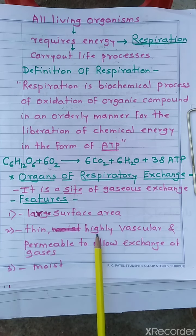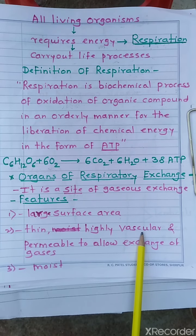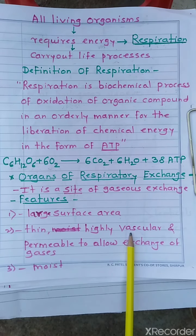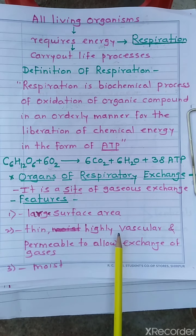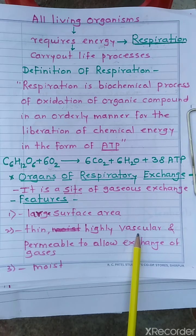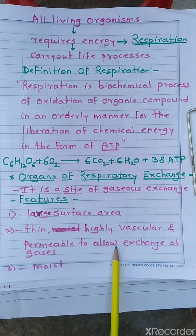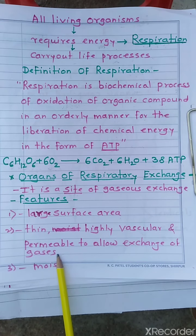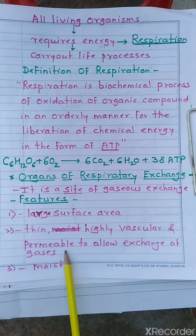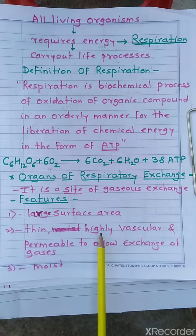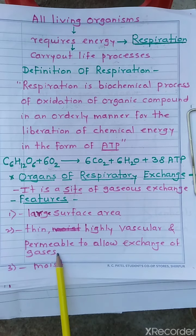Highly vascular means the organ has a good supply of blood vessels. When there are more blood vessels, a richer blood supply enables much better gas exchange. Permeable means the organ or surface should be highly porous — the more porous, the better the gas exchange. So the respiratory surface should be thin, highly vascular, and permeable.